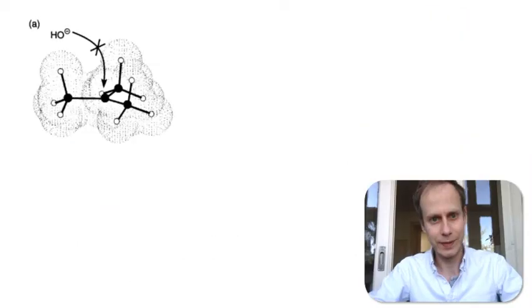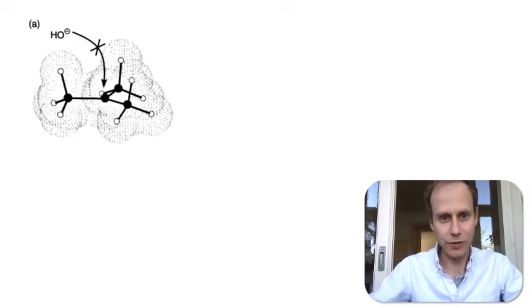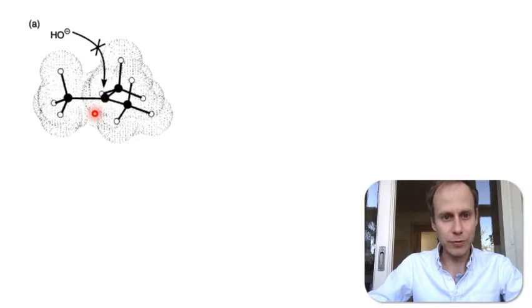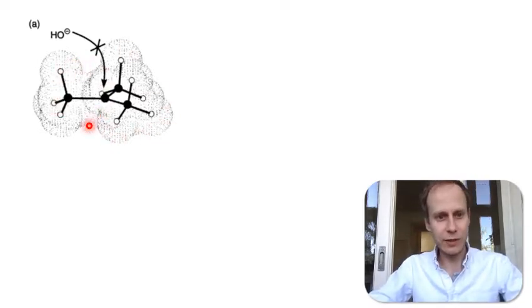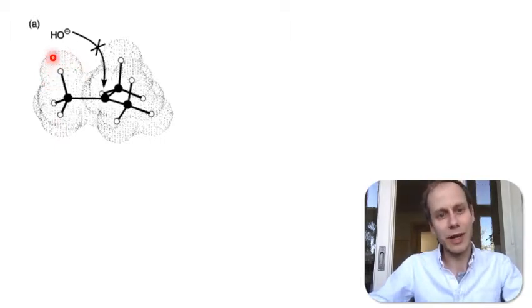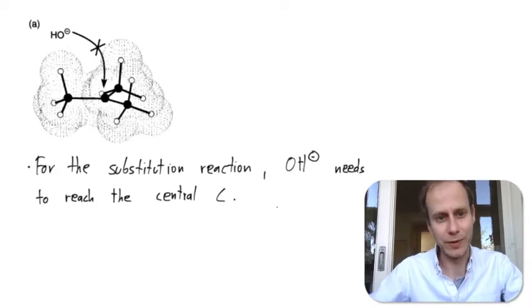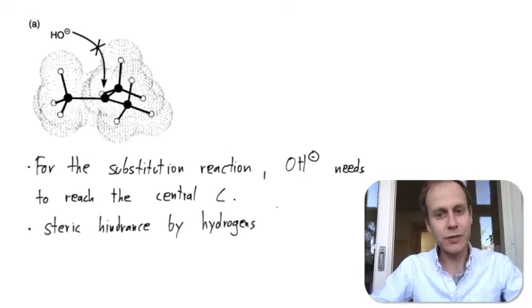Let's look at it a little closer. Consider what would happen in a nucleophilic substitution reaction: the hydroxide would have to attack the central positively charged carbocation and interact with the empty p orbital of the carbocation center. But this is sterically hindered — the volumes occupied by the electrons do not allow the hydroxide to access the central carbon to make a nucleophilic substitution. It can't reach the carbon because of steric hindrance by the hydrogens.